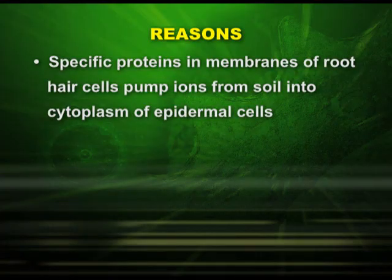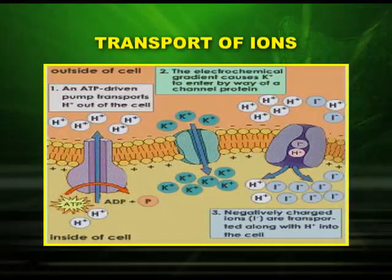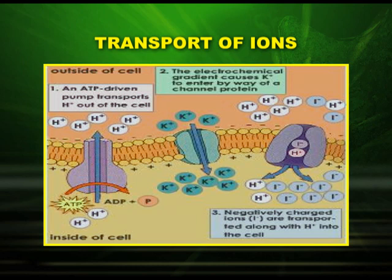Let us focus on the key concepts of active absorption. First, specific proteins in membranes of root hair cells pump ions from soil into the cytoplasm of epidermal cells. Secondly, transport proteins are embedded in the plasma membrane of endodermal cells. Active absorption can be explained by a diagram: an ATP-driven pump transports hydrogen ions out of the cell; the electrochemical gradient causes potassium ions to enter via a channel protein; and negatively charged ions are transported along with hydrogen ions into the cell.